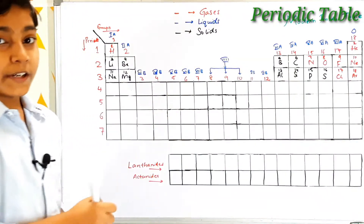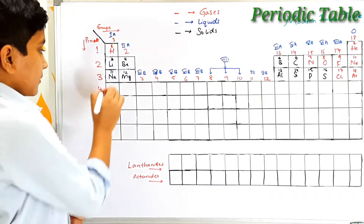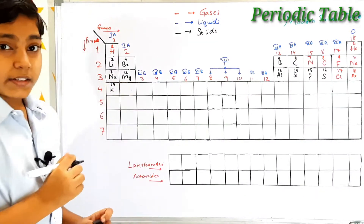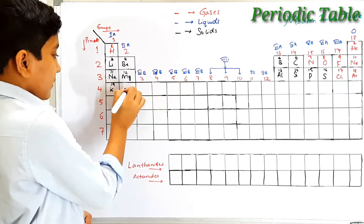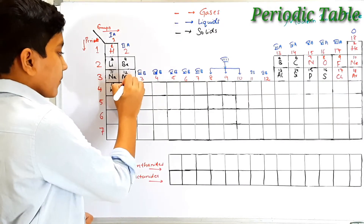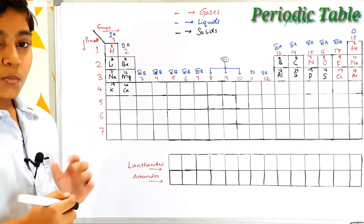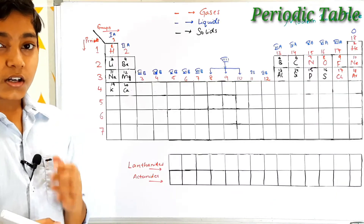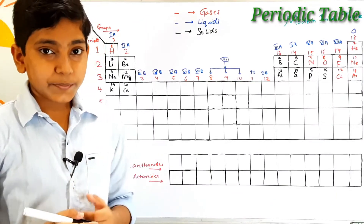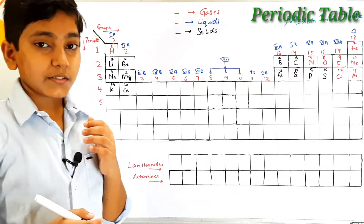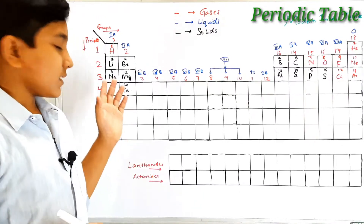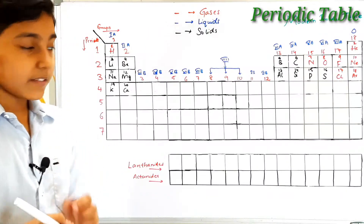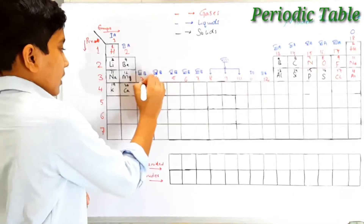The fourth period begins with potassium — its symbol is K and its atomic number is 19. Then we find calcium — its symbol is Ca with atomic number 20. If you want to know more about the first 20 elements of the modern periodic table, watch my previous video on that topic, where we discussed their properties and uses. Go to my YouTube channel and find the video.